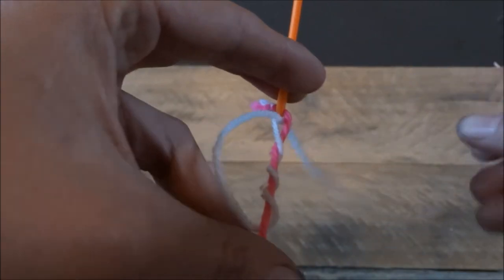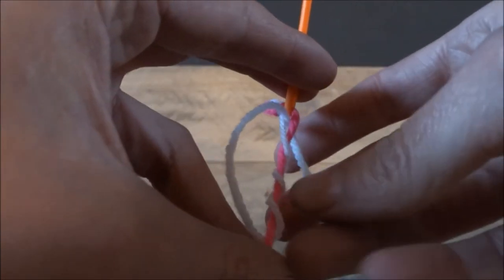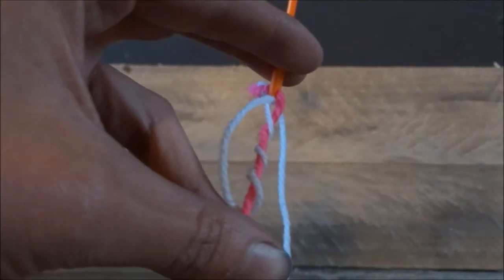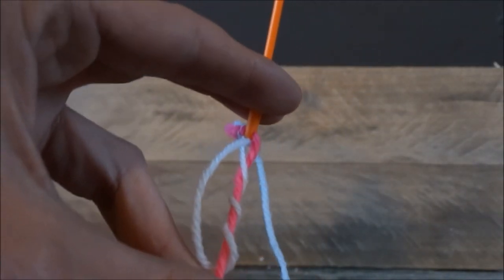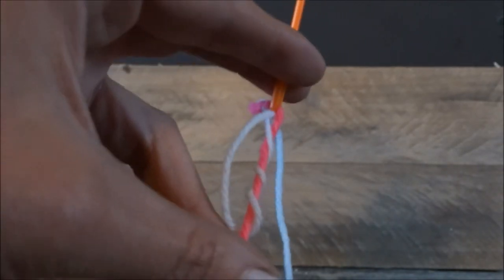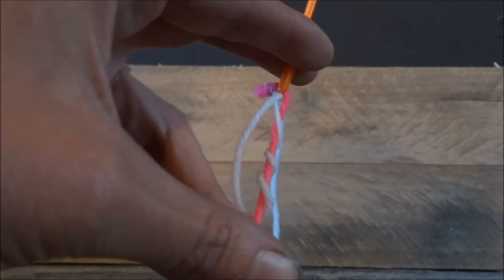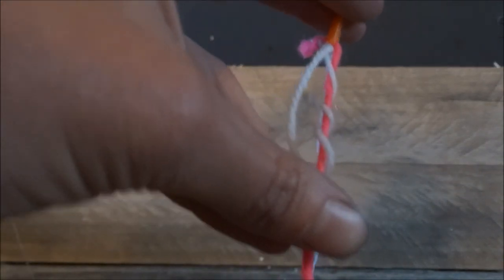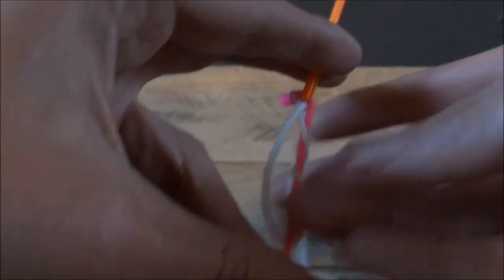Before you cinch this up, you want to wet the line. If you don't and pull this while it's dry, it will create enough friction to generate a little heat, which will weaken the line and create a weak knot. This could cause you to lose your lure while casting or, even worse, lose a fish when they're on the hook.